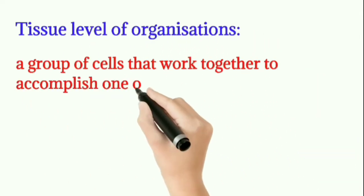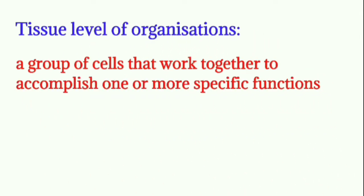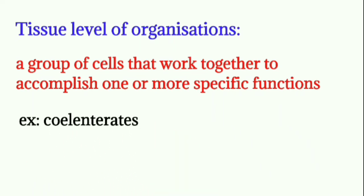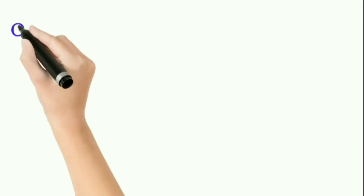Tissue level of organization. A group of cells that work together to accomplish one or more specific functions constitutes a tissue, which performs particular functions. This is called tissue level of organization. Here, there is no coordination between the tissues. The example is cnidarians — members exhibit this type of organization.